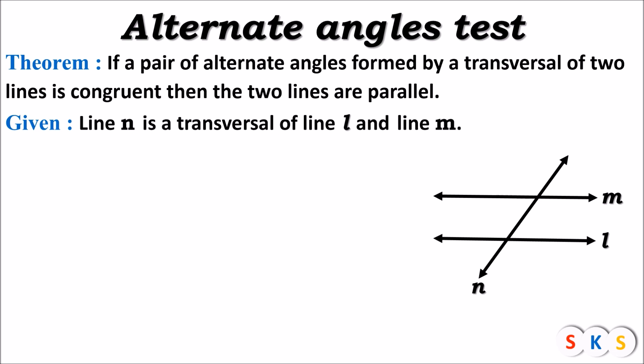What else is given? It is given that the pair of alternate angles are congruent. Here I have taken angle a and angle b as one pair of alternate angles, and it is given that these two angles are congruent. So it is given that angle a is congruent to angle b — we will add that in the given part.